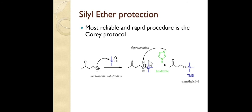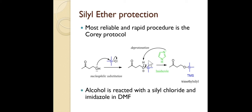The most common and reliable rapid procedure for silyl protection is the Corey protocol — developed by the famous scientist E.J. Corey. In the Corey protocol, alcohols react with silyl chloride and imidazole in DMF to give silyl-protected products in good yield. Instead of hindered amines, imidazole is used as the base.